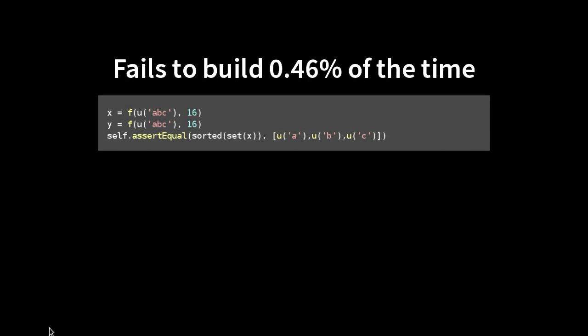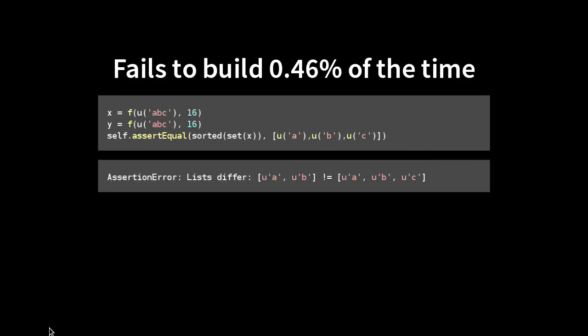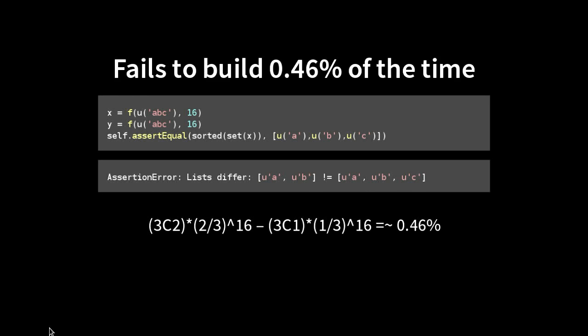Another interesting case: using random numbers in builds. There's a function that generates a random string. We found this package actually failed to build about 0.46% of the time — because 0.46% of the time it would generate a long string containing only the letters A and B, which would not match the right-hand side of the assertion. If you do the maths, that works out to 0.46%. Most of the time it was generating random numbers perfectly fine, but that small percentage of the time it would fail.